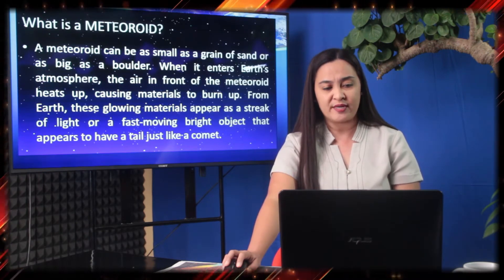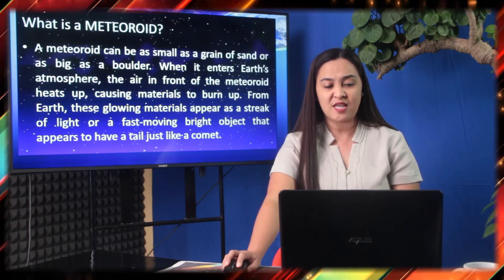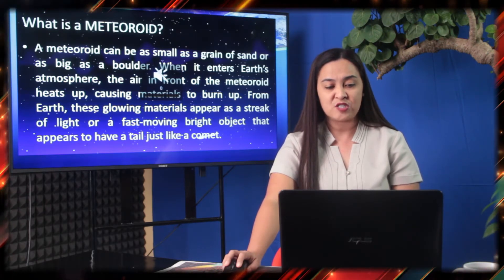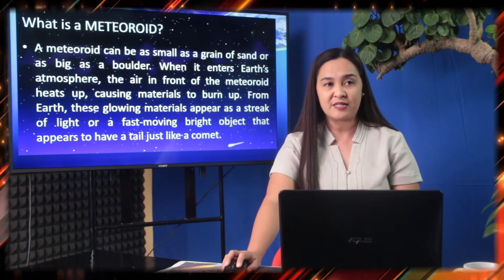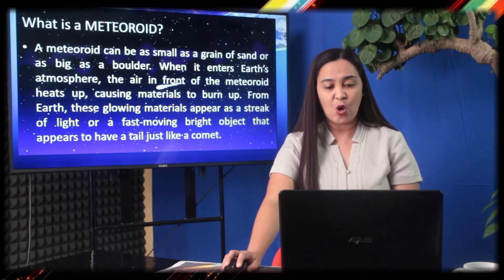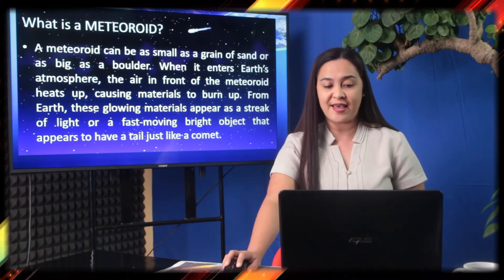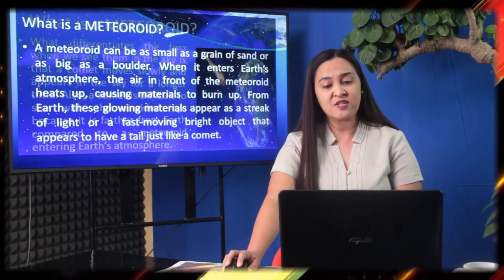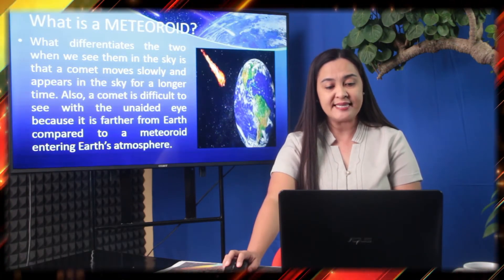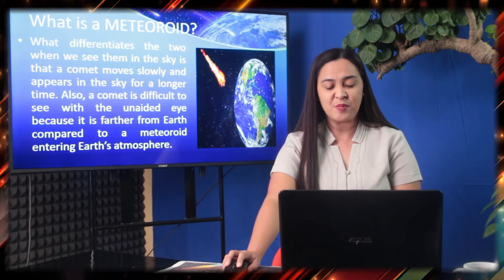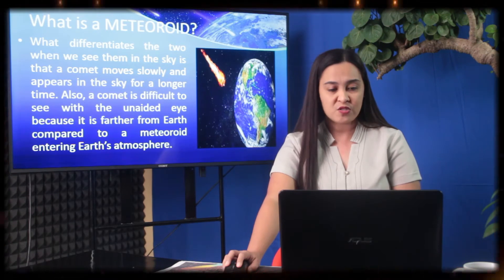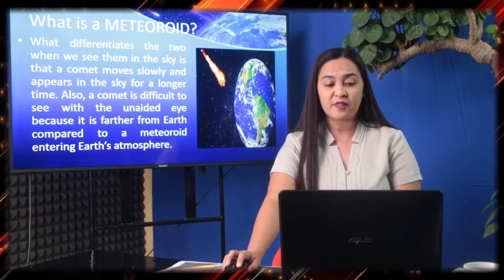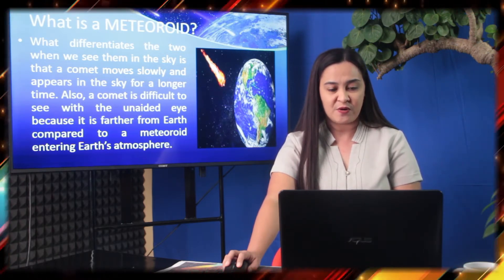What is a meteoroid? A meteoroid can be a small grain or as big as a boulder. When it enters Earth's atmosphere, the air in front of the meteoroid heats up, causing materials to burn up. From Earth, these glowing materials appear as a streak of light or a fast-moving bright object that appears to have a tail, just like a comet. What differentiates the two is that when we see them in the sky, a comet moves slowly and appears in the sky for a longer time. Also, a comet is difficult to see with the unaided eye because it is farther from Earth compared to a meteoroid entering Earth's atmosphere.